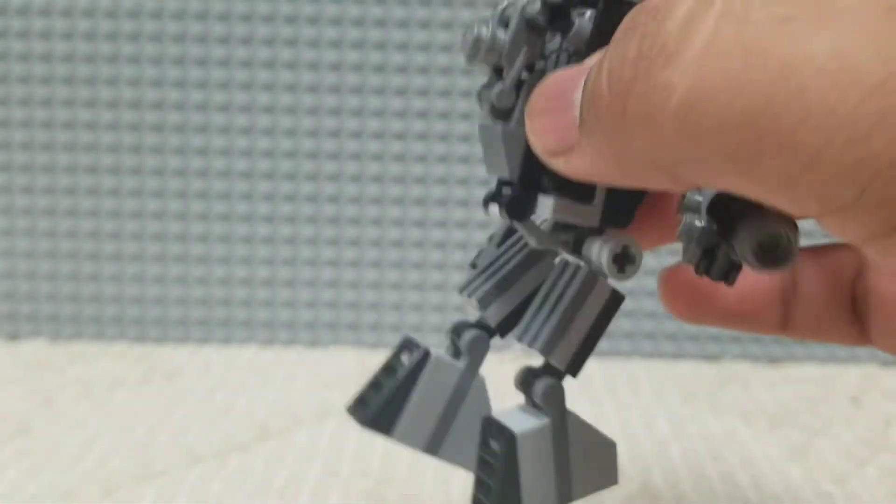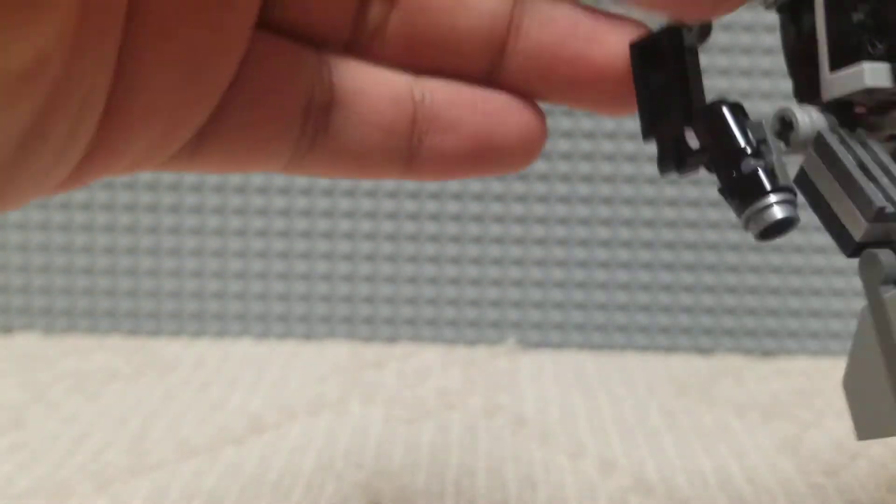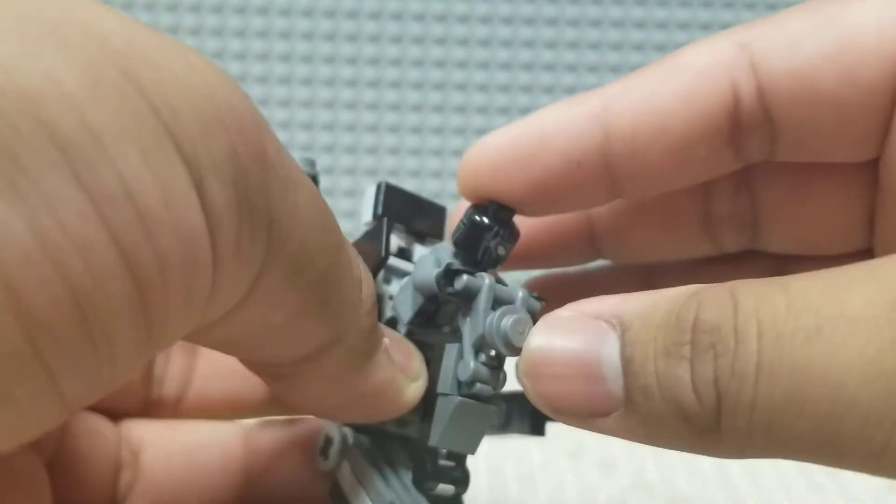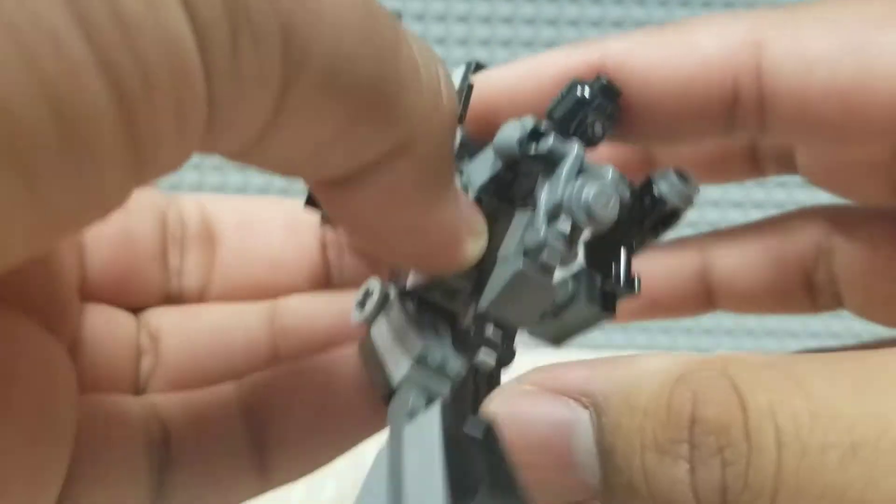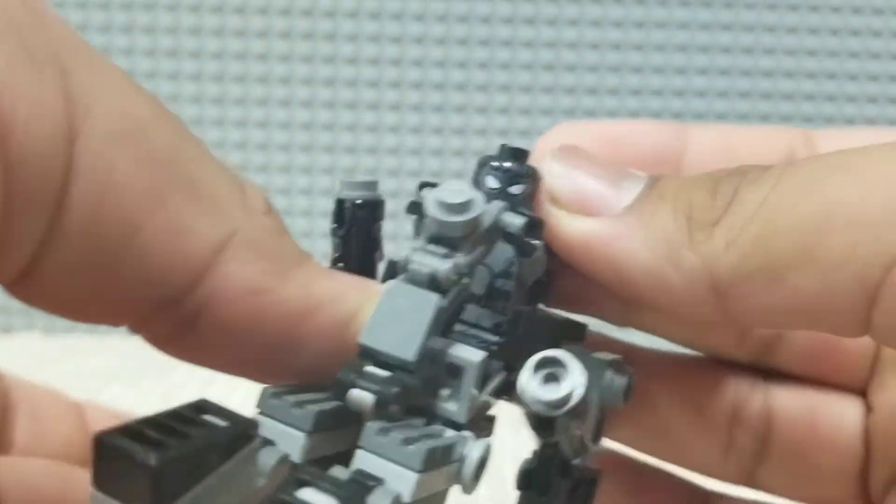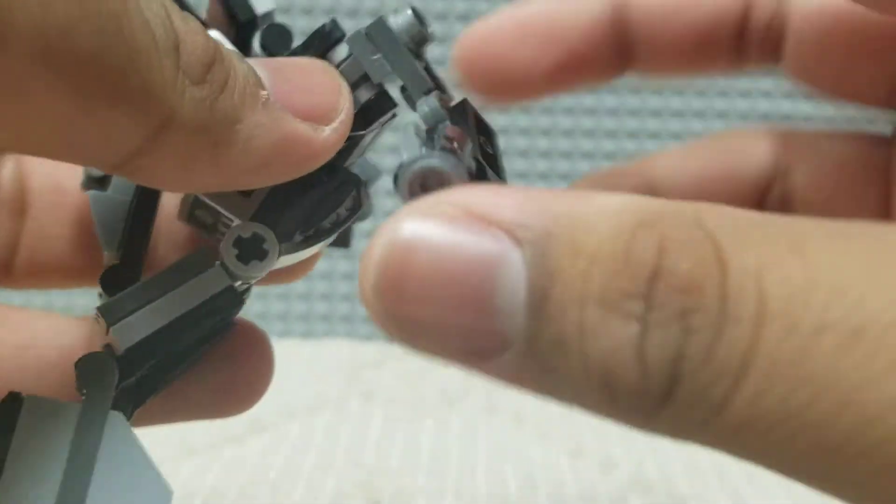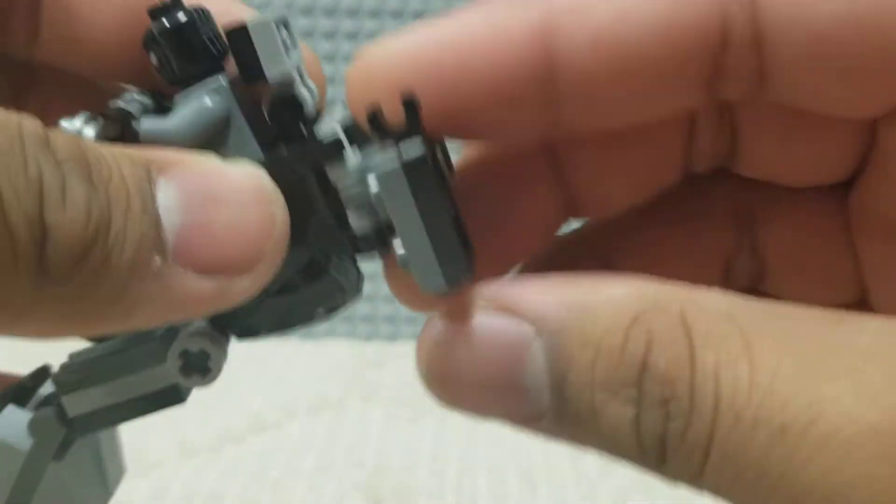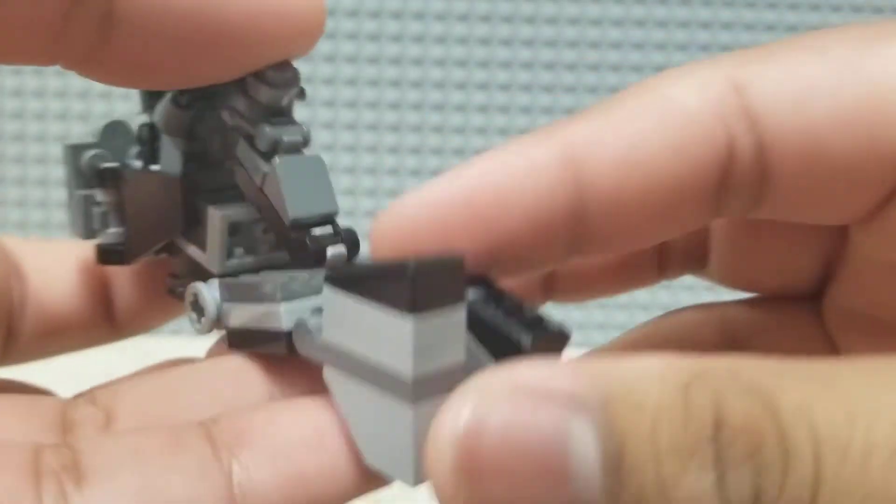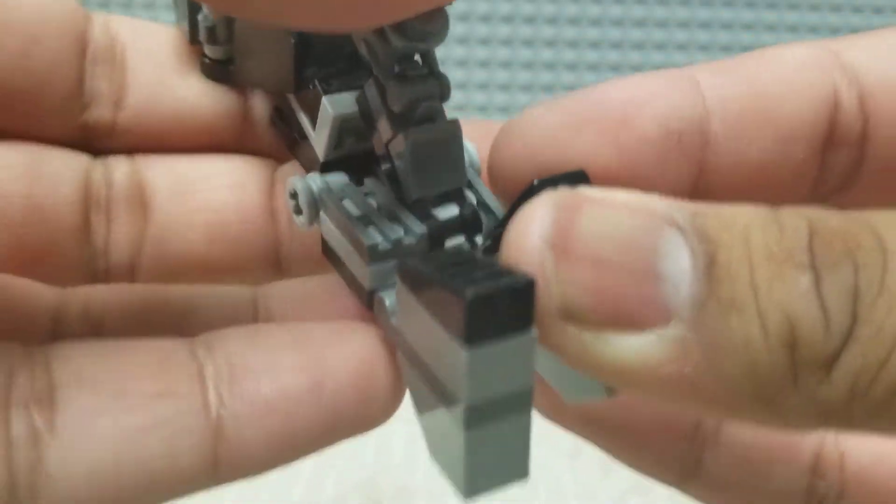But I also added one more feature to this. I mean, I wouldn't say it was intentional or not. To help with speed and transportation, I guess, I gave it the ability to transform into like a speeder bike, I guess. So what you do is just push the figure here forward. Put this back. Well, first I should probably take off the weapons. Then just fold the arms together, turn them around. Here. And then just fold the legs up. Here.